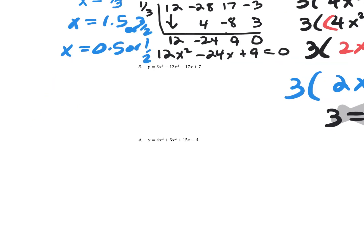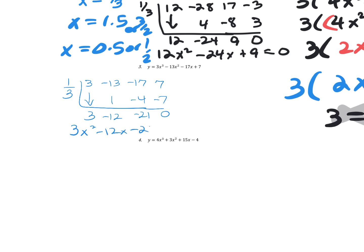For number three, the process is the same: key it into your calculator first, then locate a rational zero using your trace feature or calculate zero. The rational zero I found is 0.3 repeating, equivalent to one third, so I'll do synthetic division with one third. The coefficients are 3, negative 13, negative 17, and positive 7. Bring down, multiply, add the column, multiply, add the column, multiply, and add the column to get 3x squared minus 12x minus 21 equals zero.